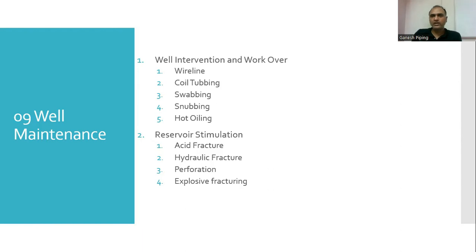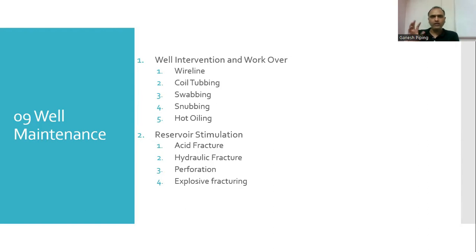In well intervention and workover — part one — we have five methods: one, wireline; two, coil tubing; three, swabbing; four, snubbing; and five, hot oiling. These are the five methods we are going to explore.